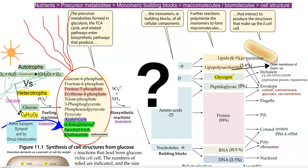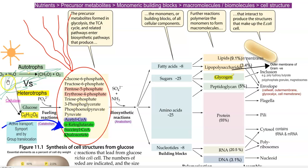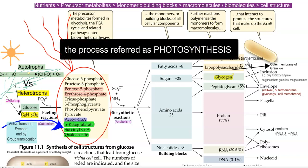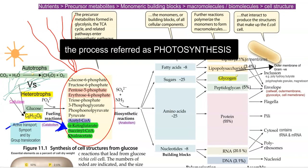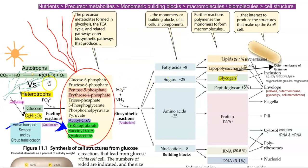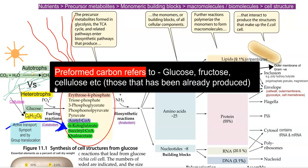From where are they getting this glucose? Glucose can be obtained by an autotrophic organism through carbon fixation. Any kind of autotrophic organism can convert atmospheric carbon dioxide into cell carbon, which can then be used for other processes. Whereas, in the case of a heterotrophic organism — and most of the bacteria are heterotrophic in nature — they will be using a preformed carbon.